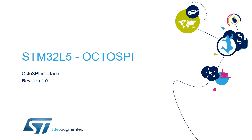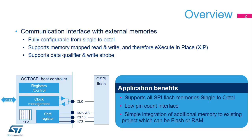Hello and welcome to this presentation of the STM32 Octo SPI interface, which presents the features of this interface. It is widely used to connect external memories to the microcontroller. Octo SPI was first implemented in the STM32L4+, and the version present in the STM32L5 supports additional features. The Octo SPI interface provides a communication interface allowing the microcontroller to communicate with external single, dual, quad, or octal SPI memories.